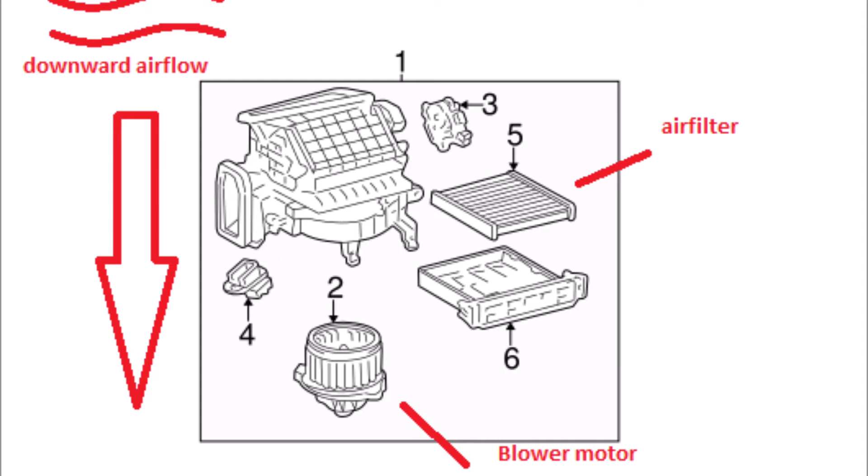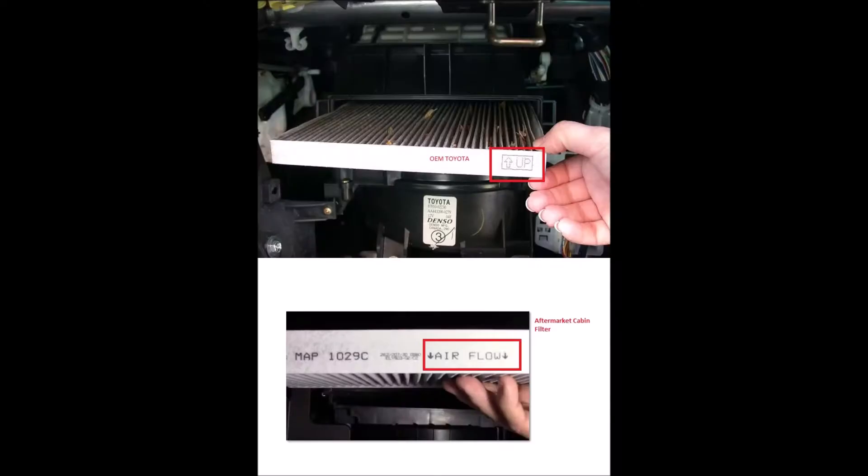So the word 'up' on the Toyota cabin air filter has nothing to do with the airflow direction at all. The word 'up' you are seeing there in the filter cover simply tells us which side goes up if you're installing a Toyota branded filter.